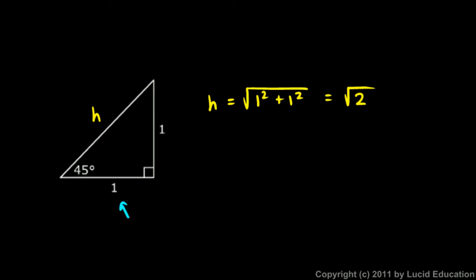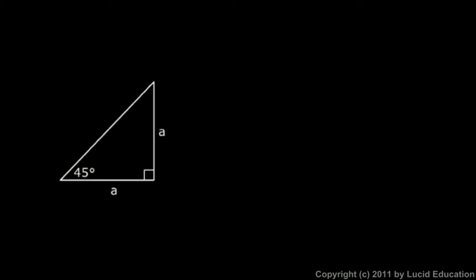And that's true if the legs here, the short sides, are length one. But we can apply that concept to a 45-45-90 triangle of any size. So instead of a leg of length one, let's call this length A here. And that could be any number. This could be a really tiny triangle or a really huge triangle. As long as it's 45-45-90, this will be the case.